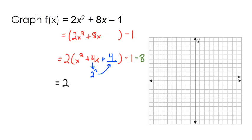So let's copy what we have so far. I have 2 times x squared plus 4x plus 4. And then outside my parentheses I have a minus 9. Because those two when I combine them would become minus 9.